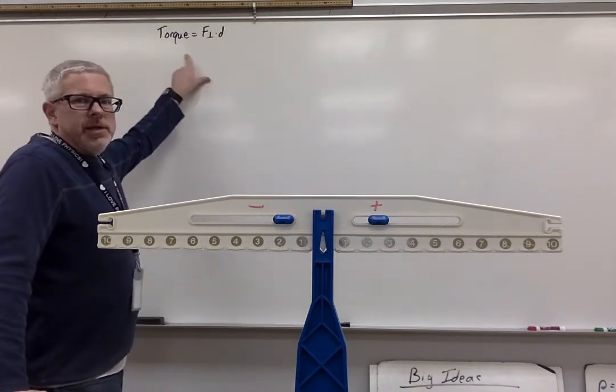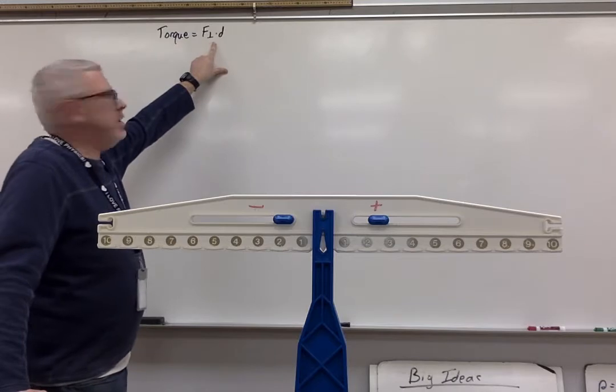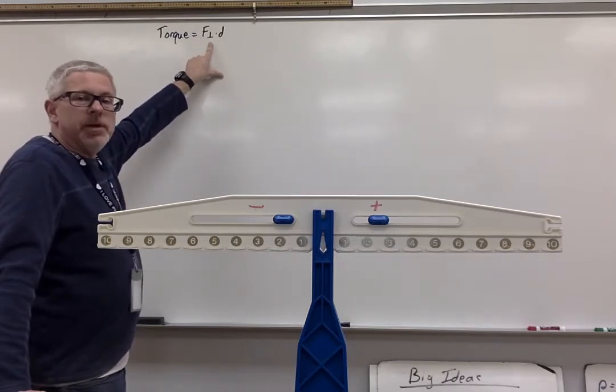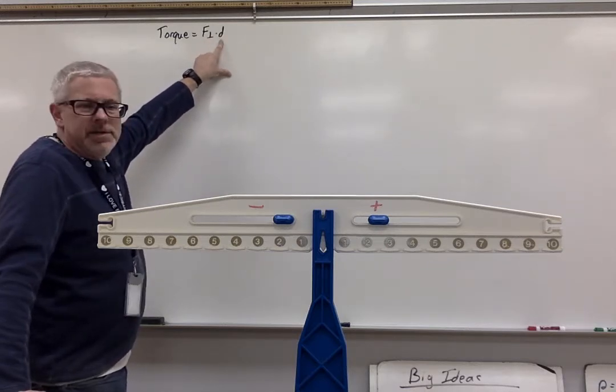So the formula that in the Flipping Physics Ed Puzzle that I talked about of using is this perpendicular force. That's what that upside down T looks like. It just means perpendicular, multiplied by force, or perpendicular force multiplied by distance.